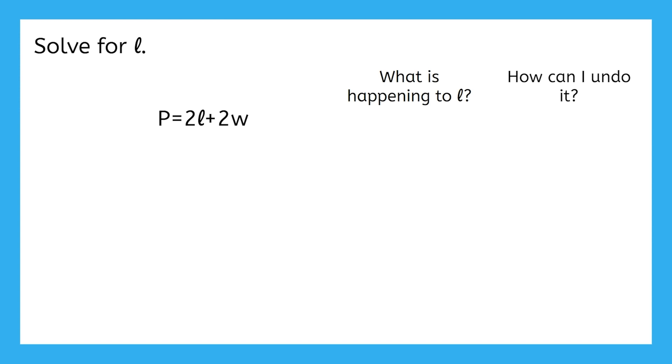What is happening to the L in this equation? Thinking about the order of operations, first it's being multiplied by 2, and then 2W is being added to that.